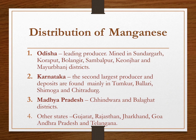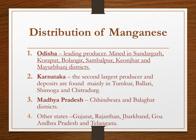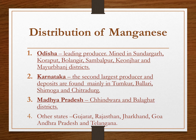Regarding the distribution of manganese, it can be found in many places in the country. Odisha is the leading producer and it is mined mainly in Sundargarh, Koraput, Bolangir, Sambalpur, Keonjhar, and Mayurbhanj districts. Karnataka is the second largest producer with deposits mainly in Tumkur, Ballari, Shimoga, and Chitradurga. This is followed by Madhya Pradesh, where deposits are found in Chhindwara and Balaghat. Other minor producers are Gujarat, Rajasthan, Jharkhand, Goa, Andhra Pradesh, and Telangana.